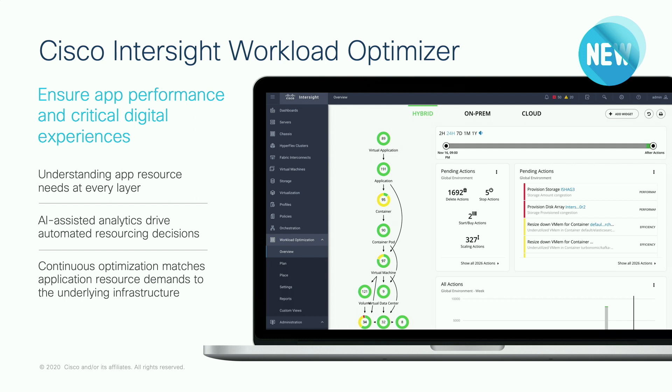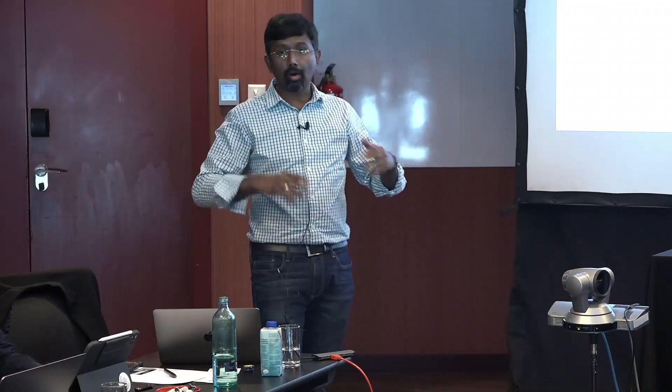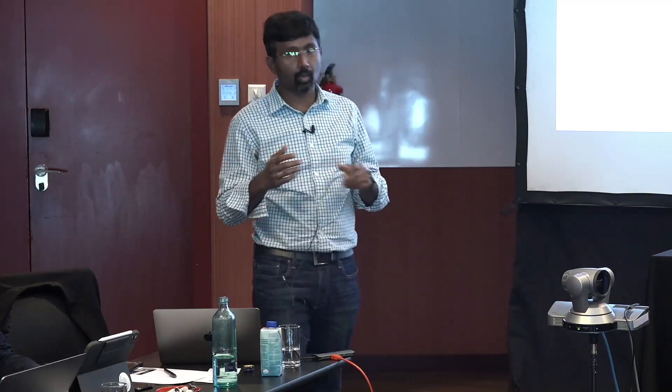It takes the whole infrastructure and the whole application stack into account and provides recommendations for ongoing optimization as well as ongoing planning and placement capabilities. It is built on AI-assisted analytics — it collects metrics from all the endpoints. Endpoints in this case could be pretty much anything: your physical server, host, hypervisor, application performance management tools like AppDynamics, or your container management tools. It talks to various targets, collects data through APIs — there are no agents — and provides ongoing real-time recommendations, both proactive and reactive, to provide the best performance possible to the end customer.